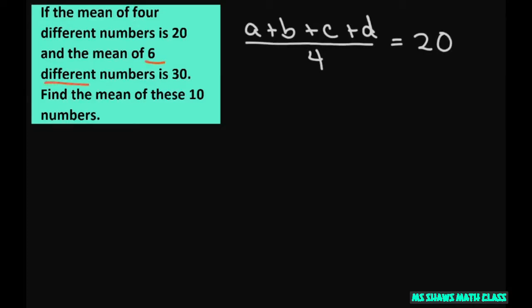And now we have another six different numbers is 30. So let's do six. So E, F, G, H, I, J. Alright, so put pluses here. Alright, and now let's divide those by six, and that equals 30.